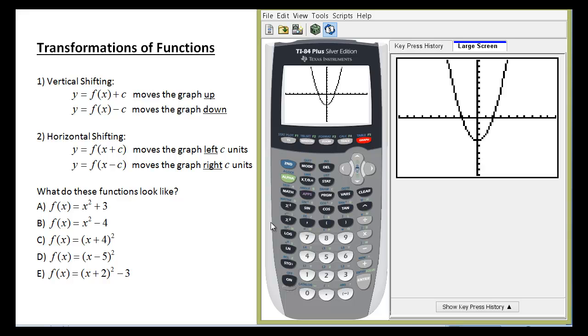Okay, what's interesting, though, is horizontal shifting. Horizontal shifting is completely opposite of what you might think. Vertical shifting, as we just saw, you see a plus 3 at the end, it goes up 3. You see a minus 4 at the end of the function, it goes down 4.